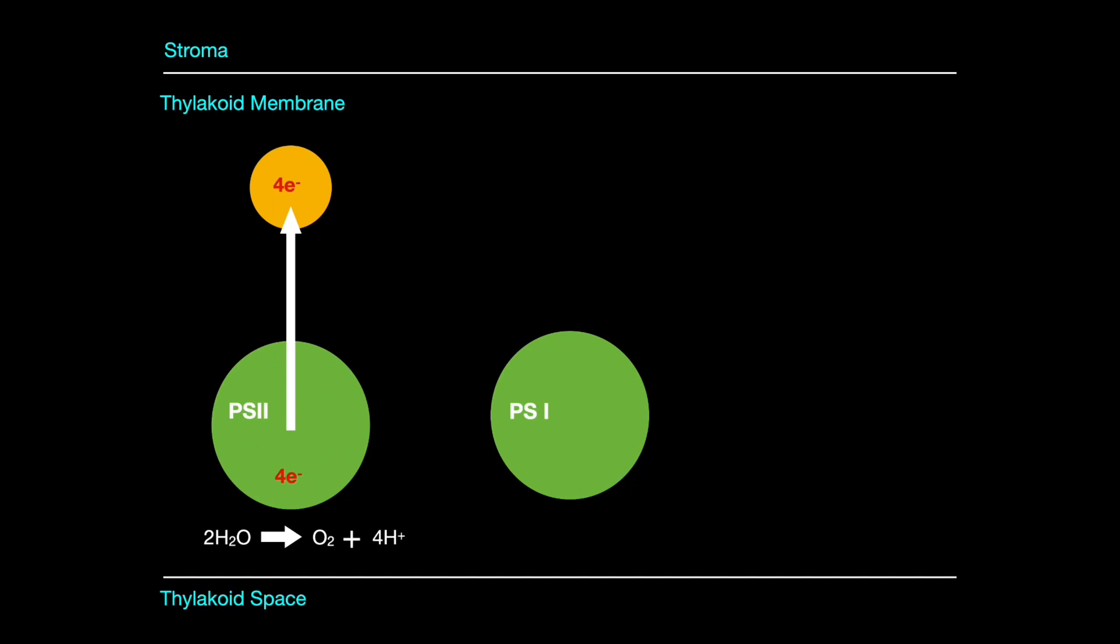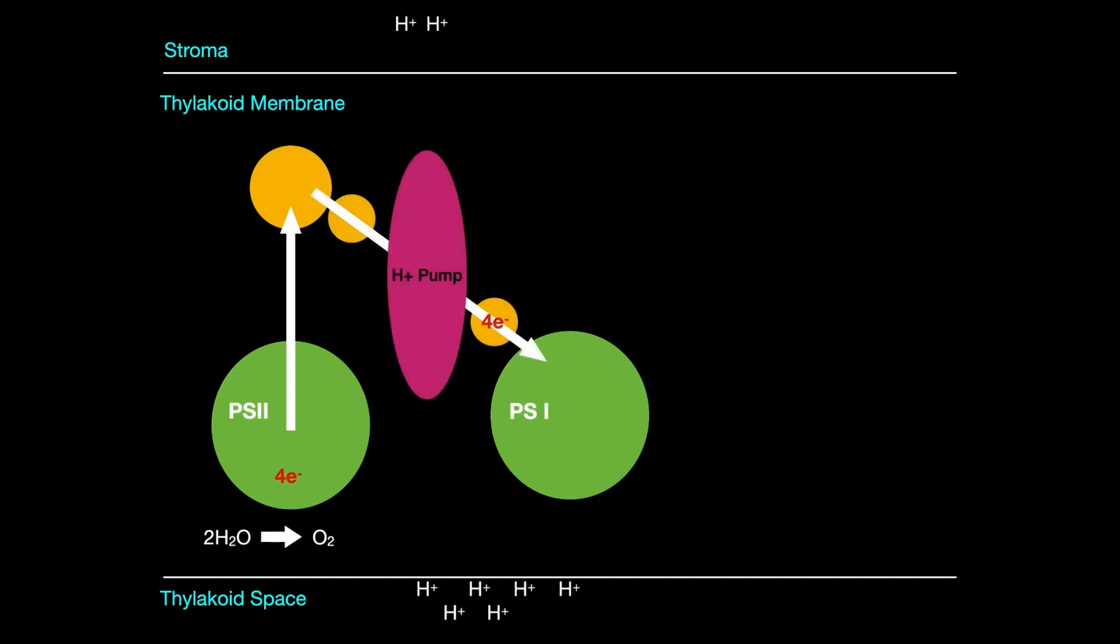The excited electrons that were captured by the electron acceptor then pass from this primary receptor down an electron transport chain, losing energy as they do so.